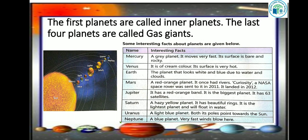Mercury is a grey planet; it moves very fast and its surface is bare and rocky. Venus is of cream color and its surface is very hot.